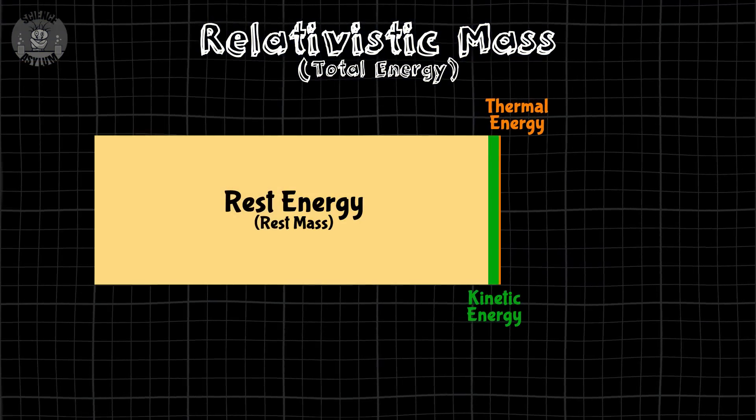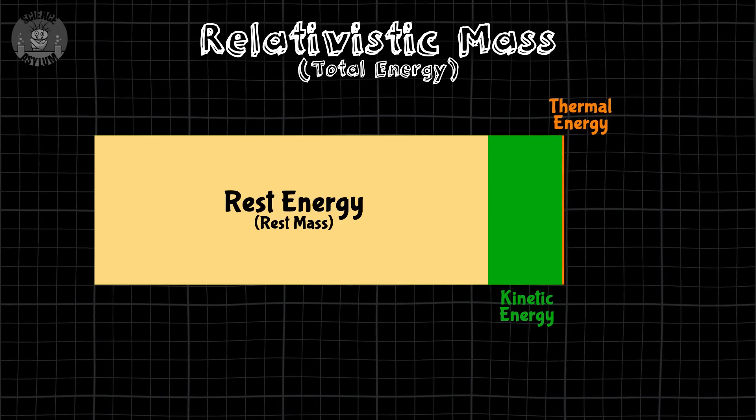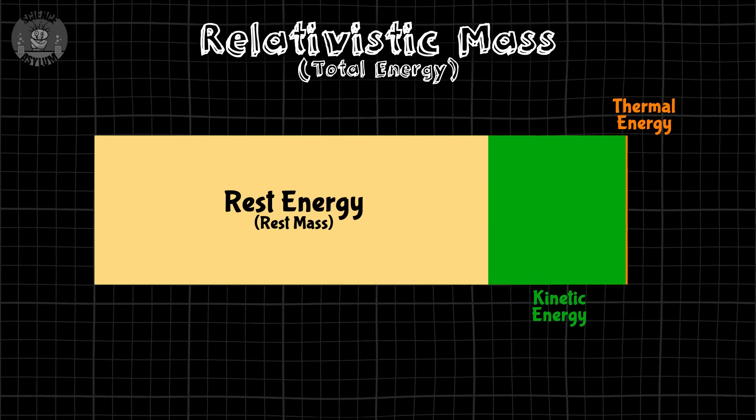It's the mass we'd measure if it were at rest relative to us. Say an object starts to speed up. Because its kinetic energy increases, so does its total mass, otherwise known as relativistic mass. But its rest mass stays the same. While rest mass usually dominates, it doesn't always.